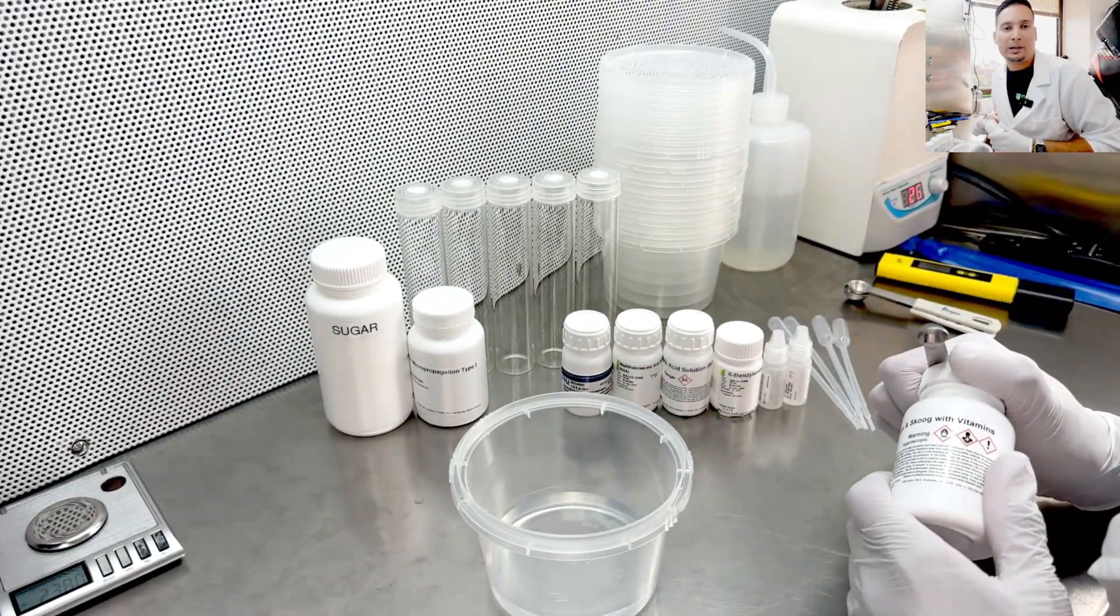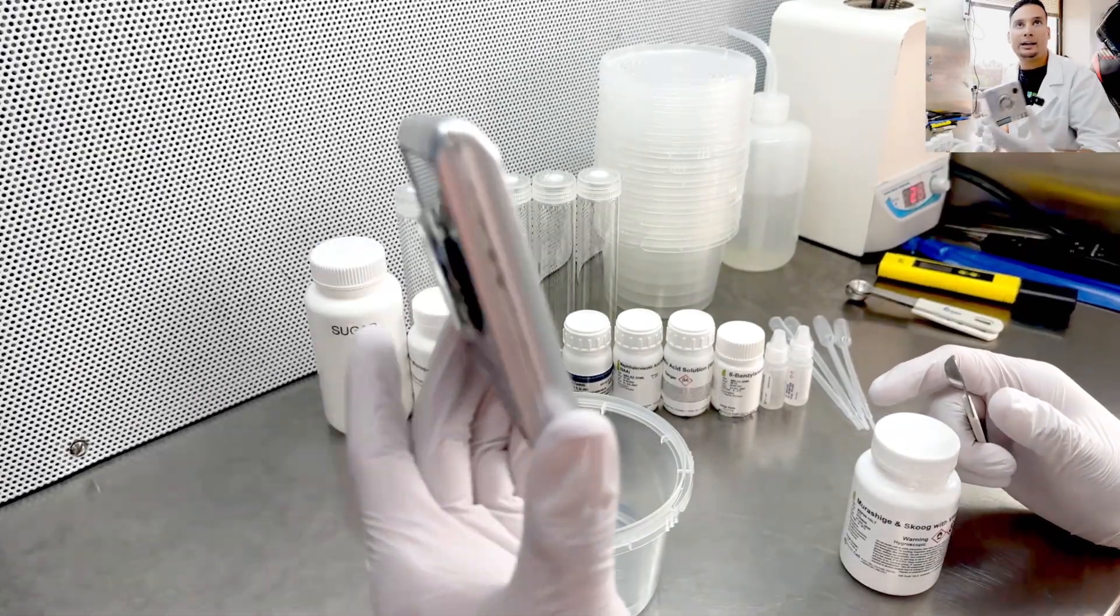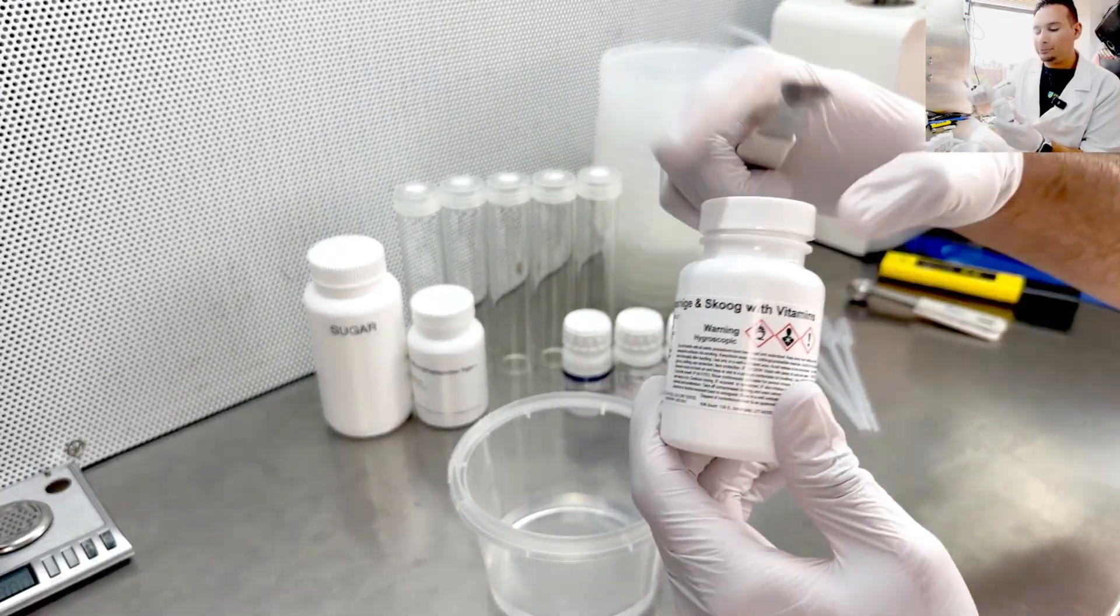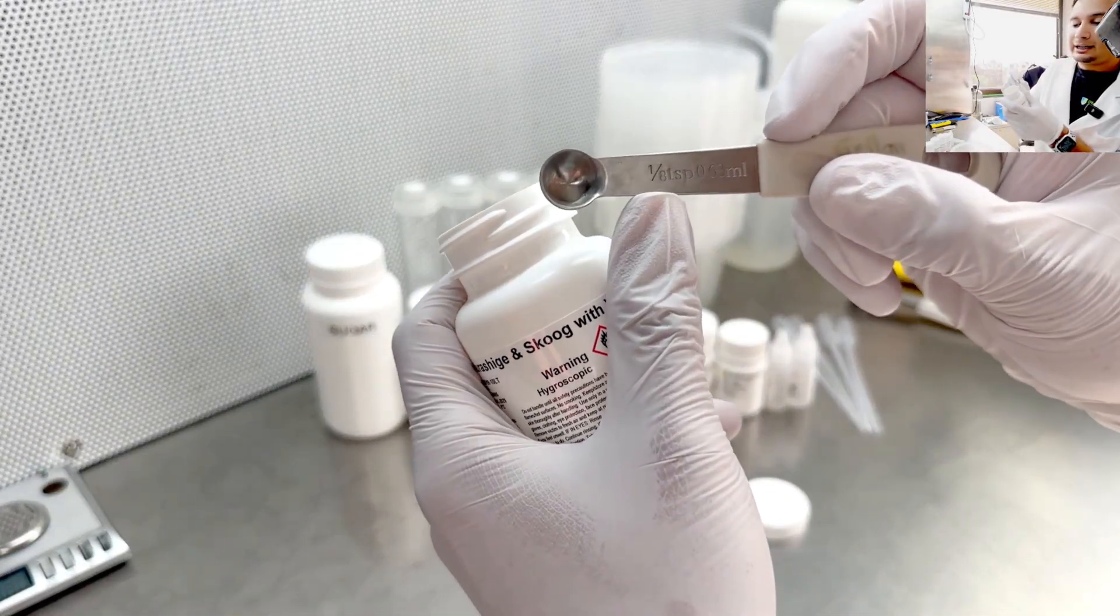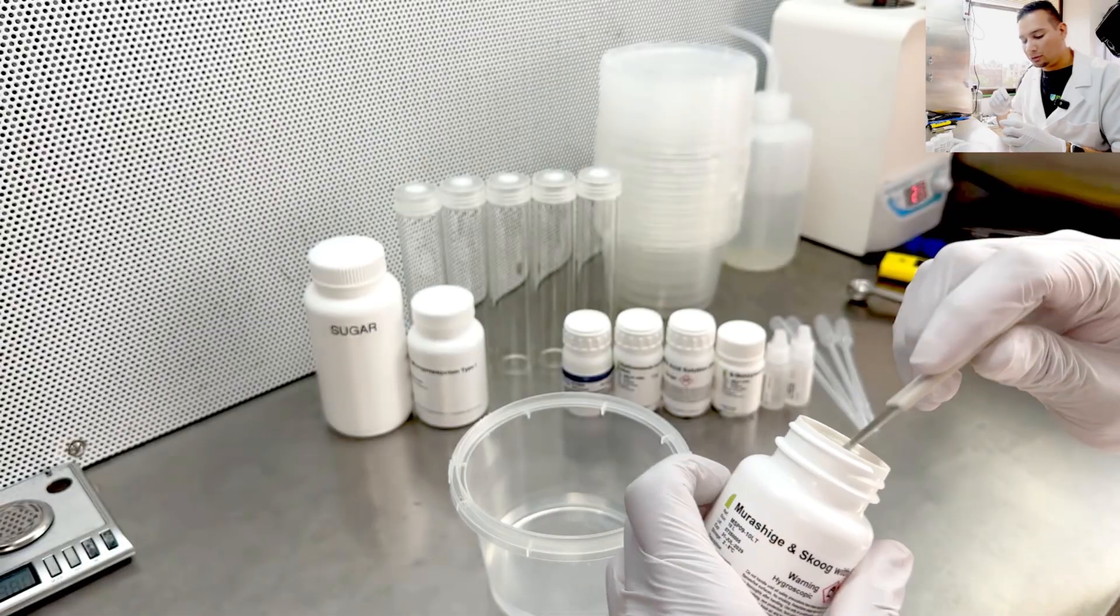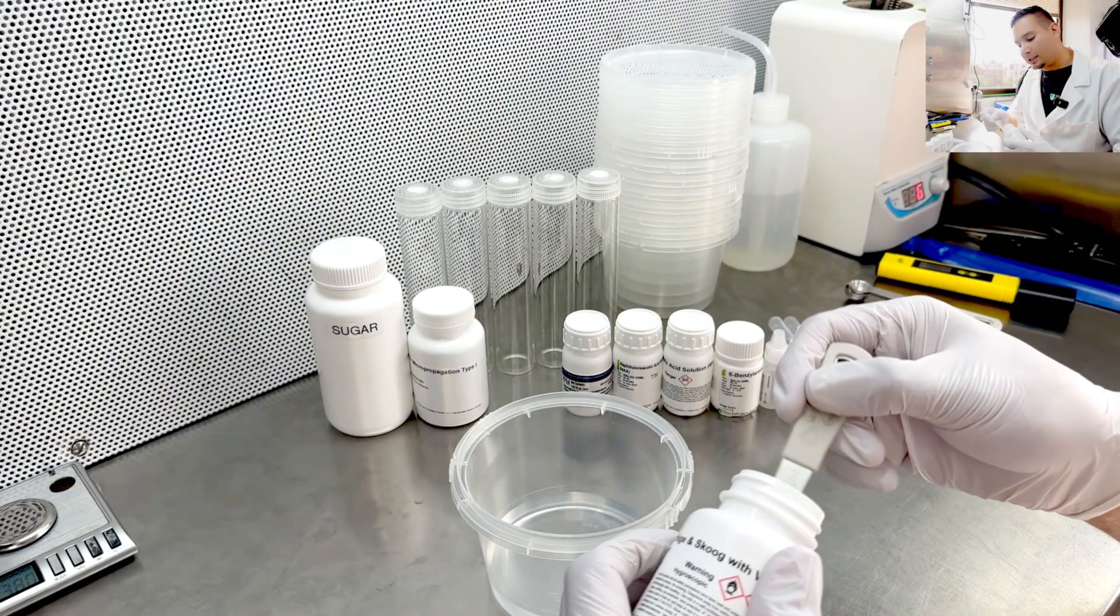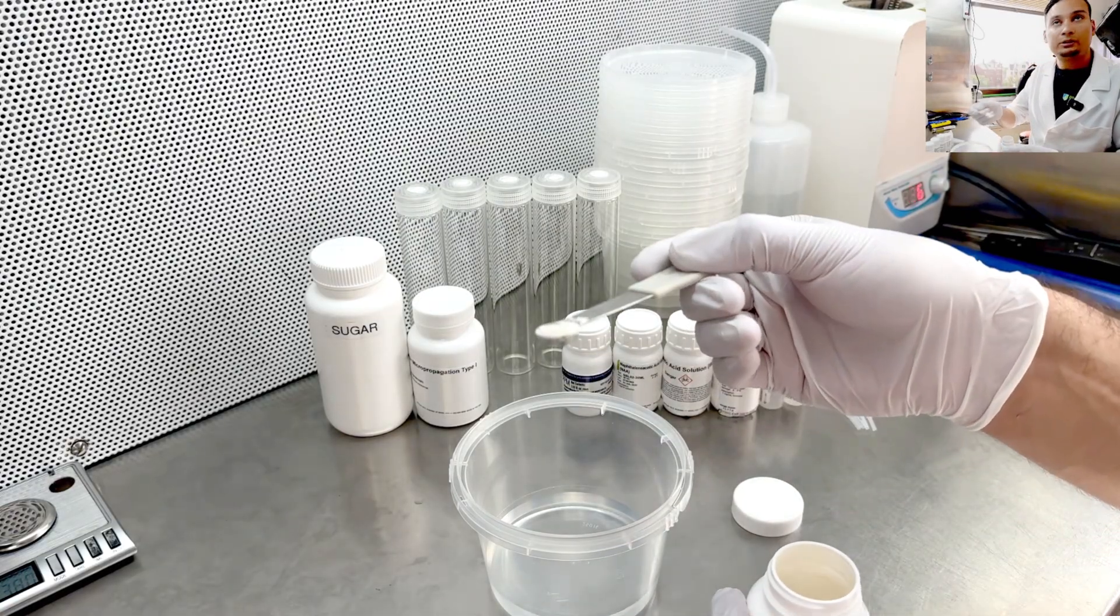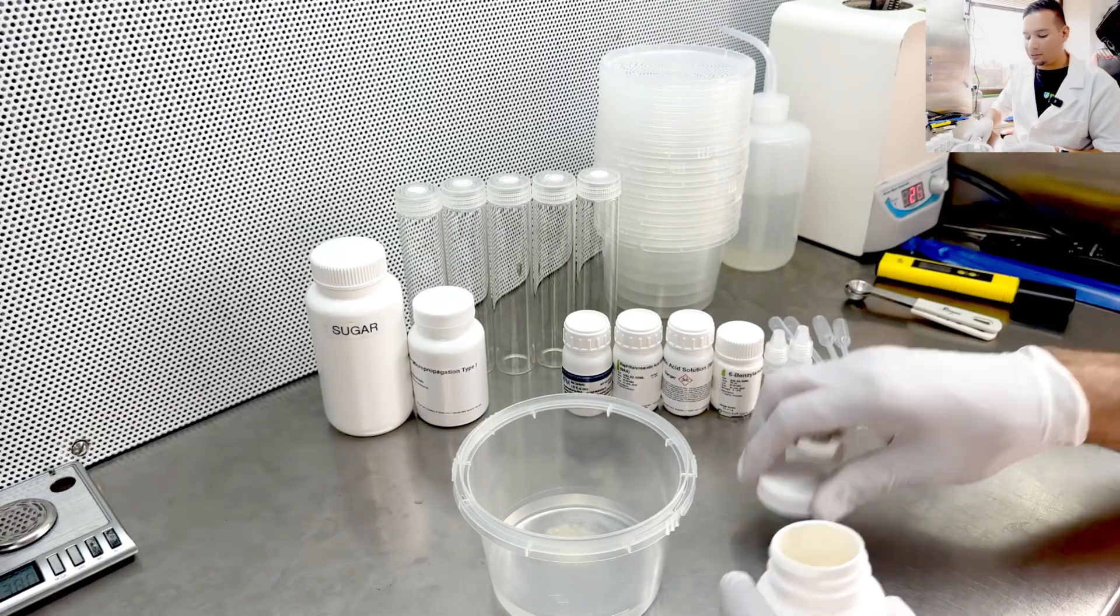However, I will show you how to make media using measuring spoons. So you don't have to get a scale if you don't want to. We need 1/8 teaspoon of MS media. 1/8 teaspoon is going to give us roughly that 0.4 grams of media that we need. So you see a flush spoon, add that into our water.